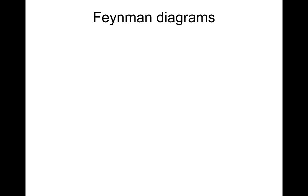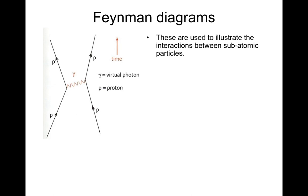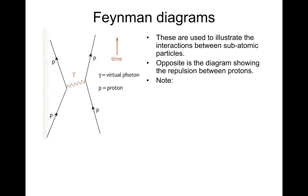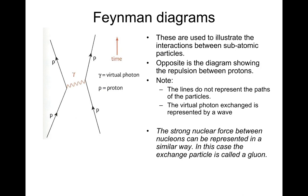Feynman diagrams — relatively straightforward. My advice is to learn them and literally regurgitate them in the examination. They're used to illustrate the interactions between subatomic particles. This diagram here is showing the repulsion between protons. The lines do not represent the path of the particles. The virtual photon exchange is represented by a wave. The strong nuclear force between nucleons can be represented in a similar way — in this case, the exchange particle is called a gluon.